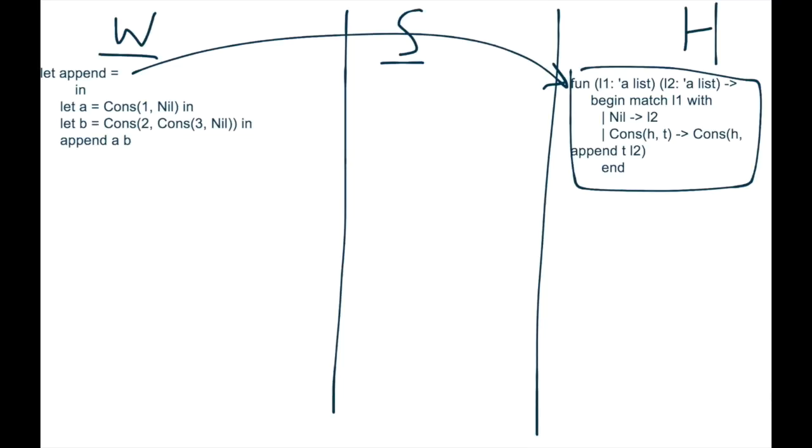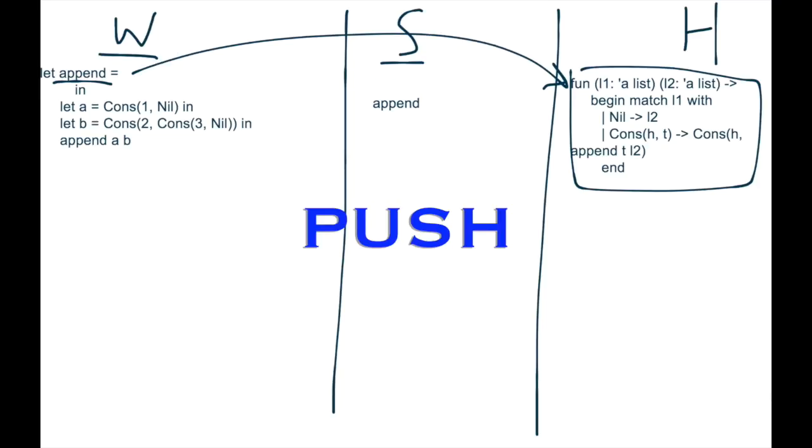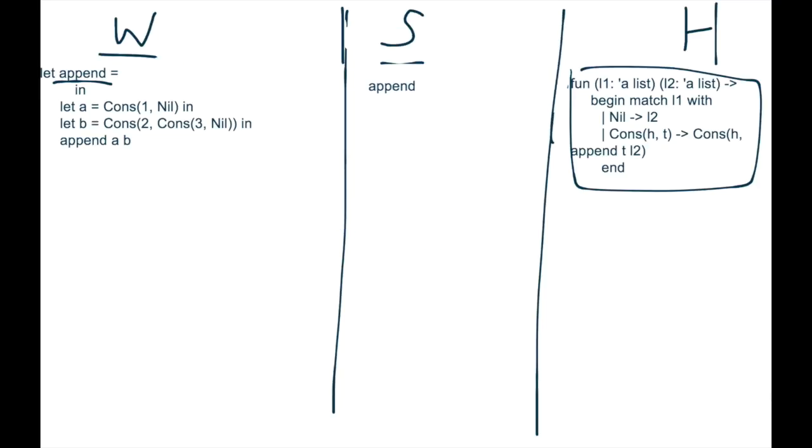Now append is just this binding pointing to its value in the heap, which happens to be a function definition. But there's nothing else here that's differentiating append from any normal binding that we've seen on the stack so far, any normal identifier. So we can now move it and push this to the stack. So we create the stack binding right there.